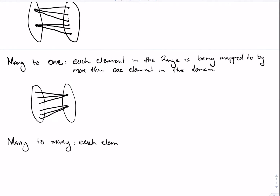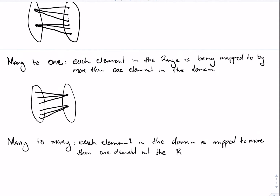Then we talk about many-to-many, which means each element in the domain is mapped to more than one element in the range, and each element in the range has more than one pre-image from the domain.